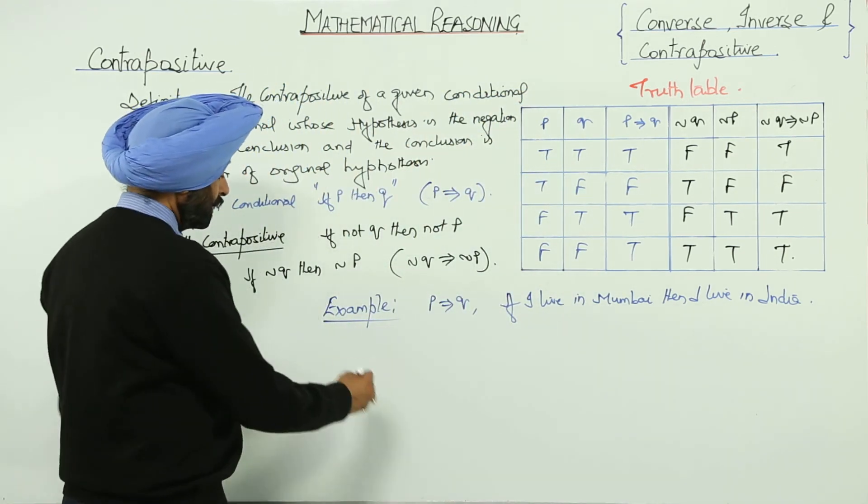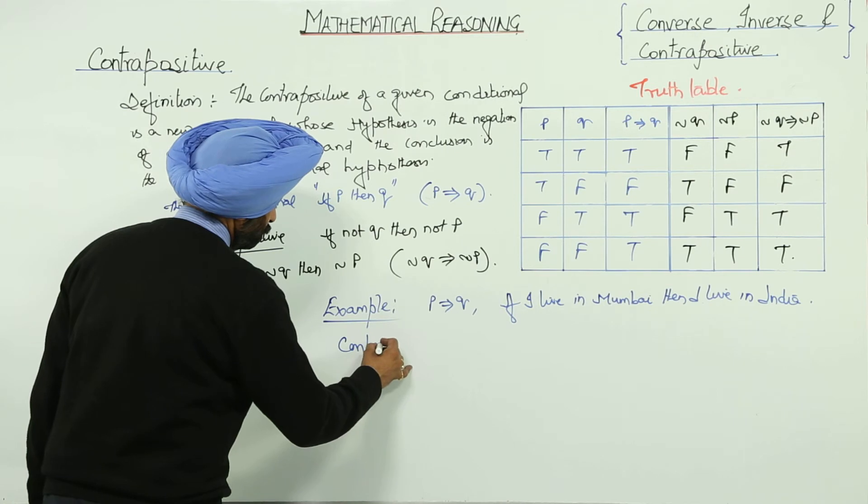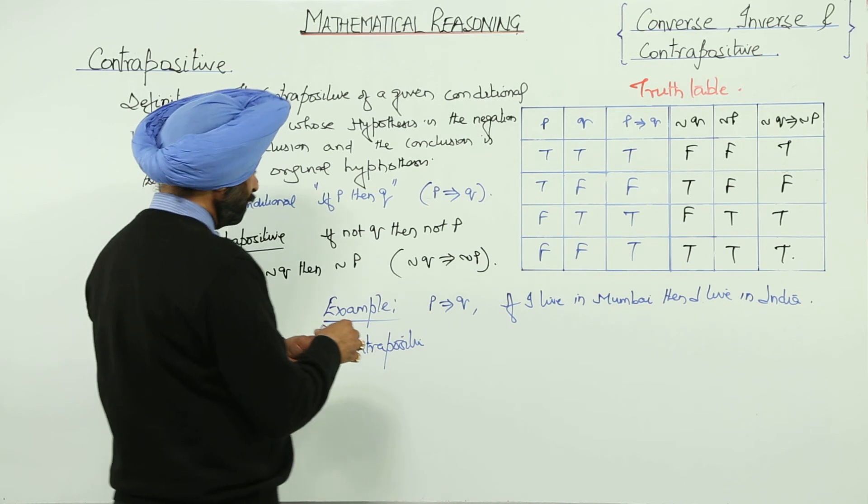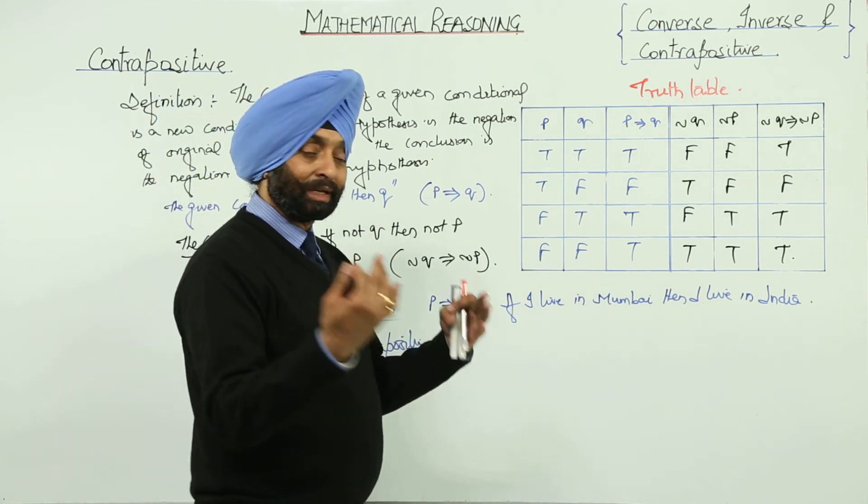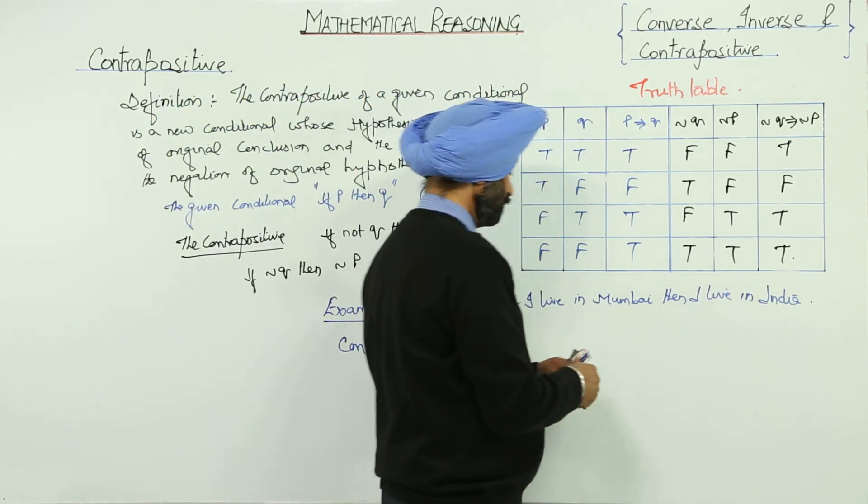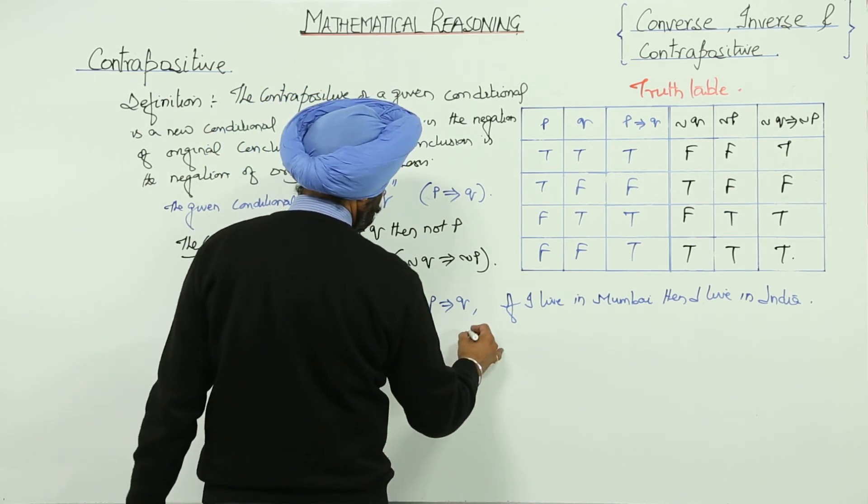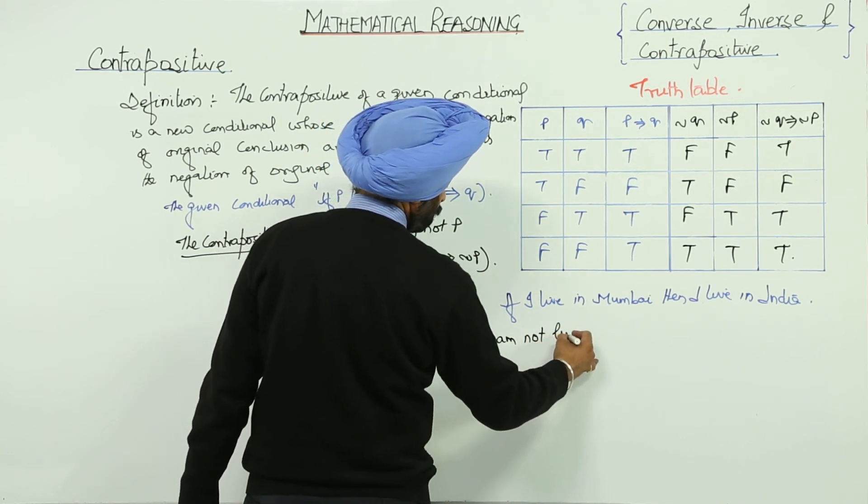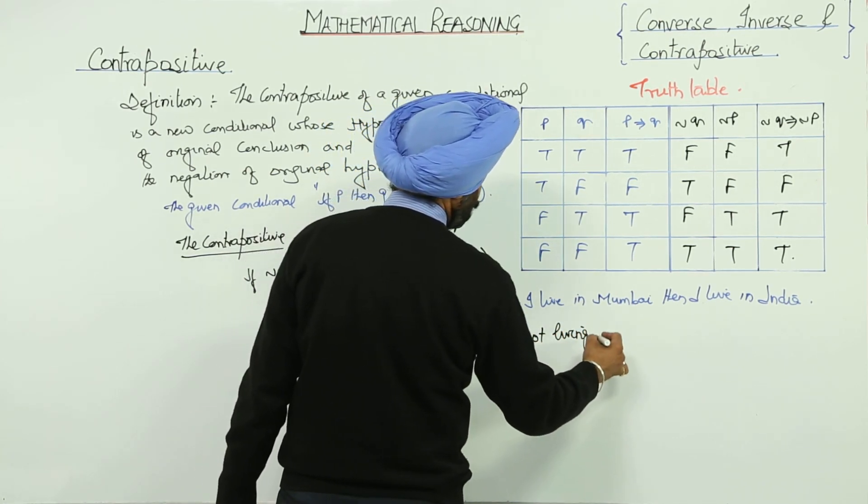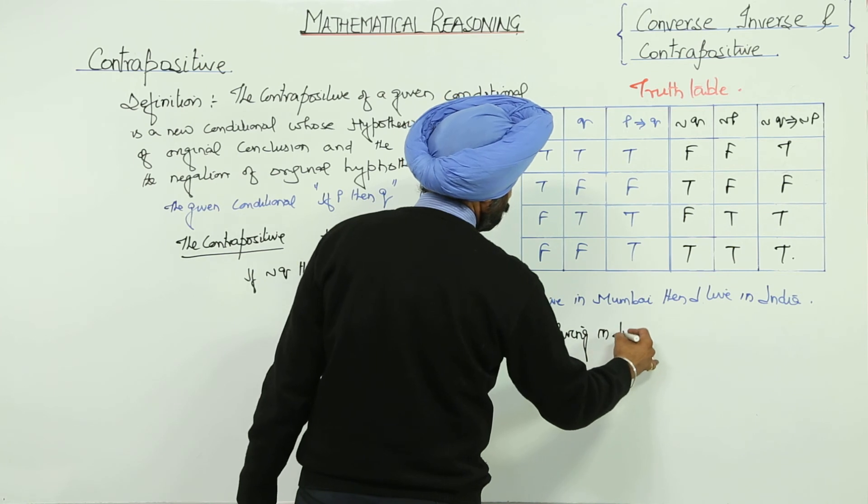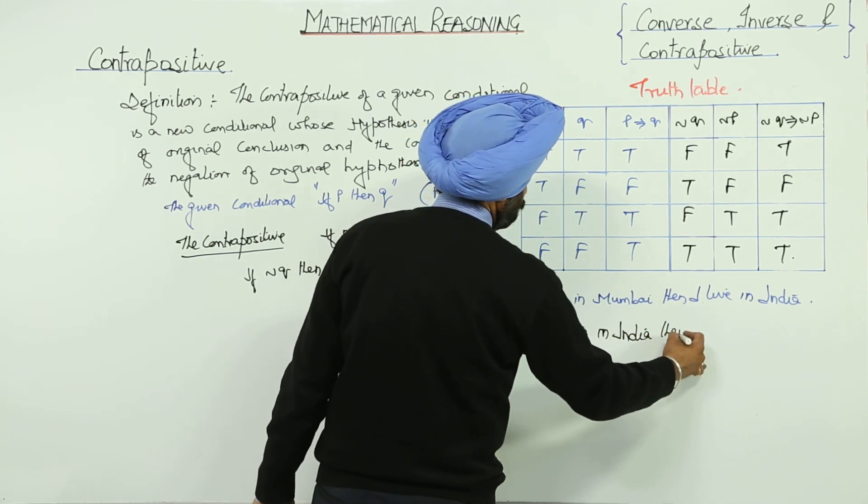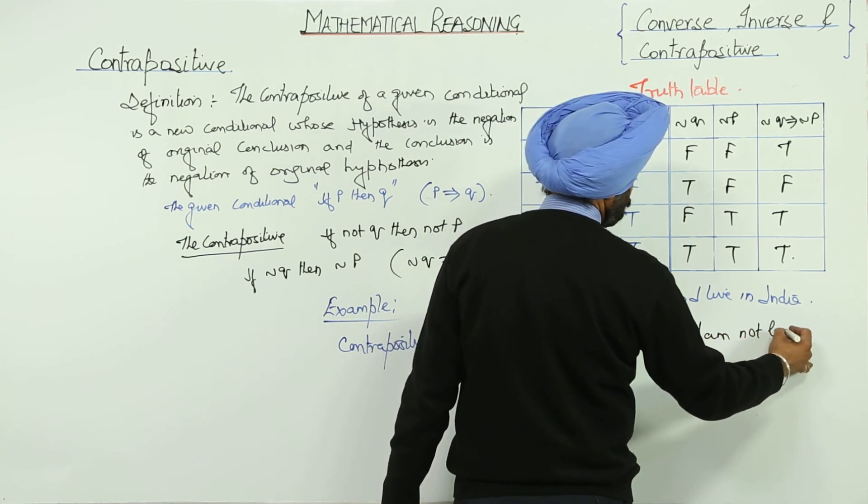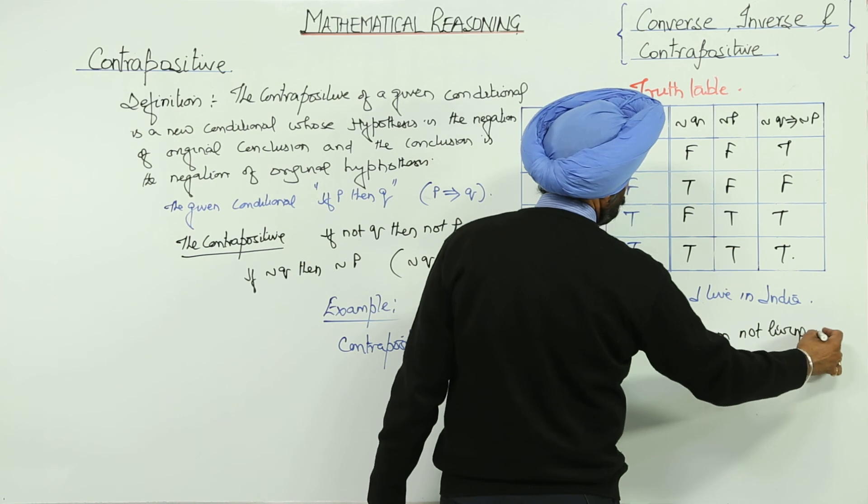And what will be the contrapositive? First negation of the second sentence, negation of this one. If I am not living in India, then I am not living in Mumbai.